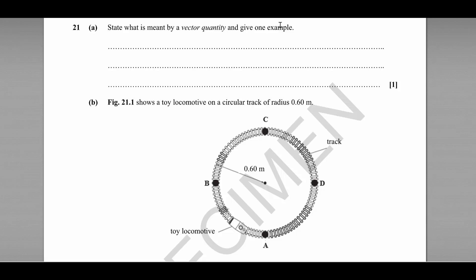Question 21 is the first of our written questions and it begins with a definition question: what is meant by a vector quantity? A vector quantity is a quantity that has both magnitude and direction. An example is velocity. We could also say acceleration, displacement, force—there are many vectors that we could choose from here.